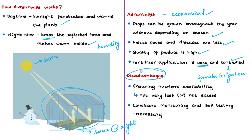However, polyhouse farming has disadvantages. One chief problem is ensuring nutrient availability and protecting plants from deficiency of minerals like boron, nitrogen, phosphorus, calcium, iron, and potassium. Plants may also suffer from excess nutrients. This type of farming requires constant monitoring and soil testing to ensure plants receive adequate nutrition. As a conclusion, greenhouse farming in India may seem costly, but many states and their horticulture departments encourage polyhouse farming by providing different subsidy schemes.